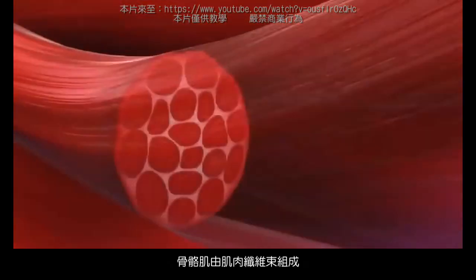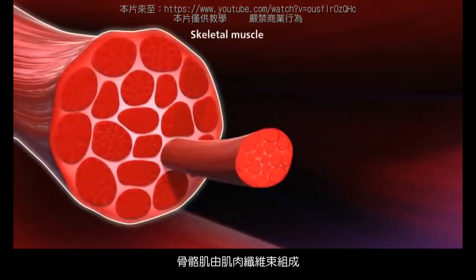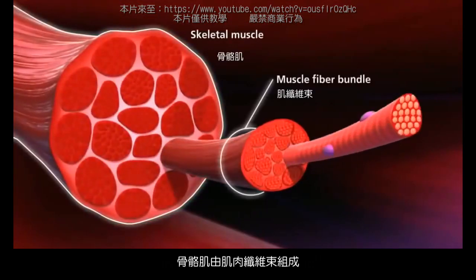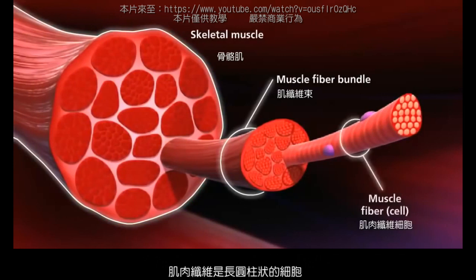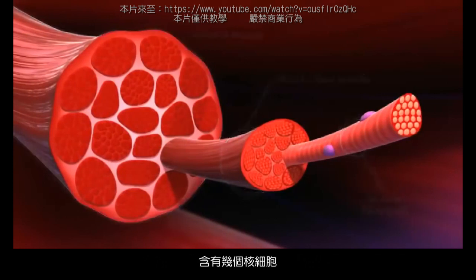Skeletal muscles are composed of bundles of muscle fibers. Muscle fibers are long cylindrical cells containing several nuclei.